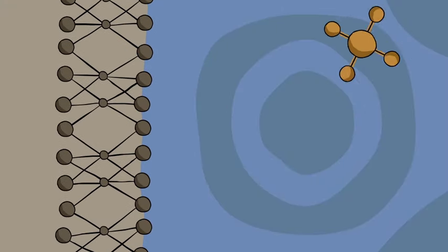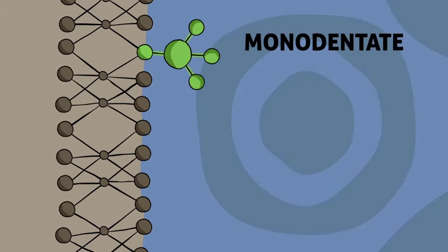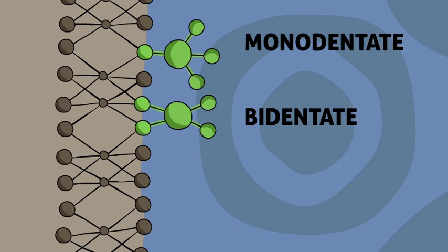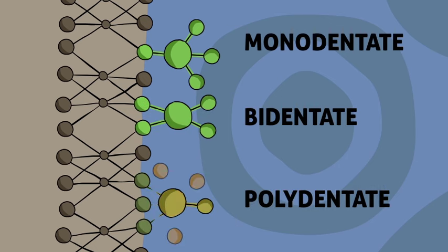Monodentate inner sphere complexes attach at one point. Bidentate complexes attach at two points. Polydentate complexes attach at three or more points. In adsorption, the more dentate links, the stronger the bond, and the harder it is to free the adsorbed ion.